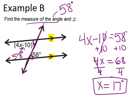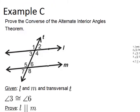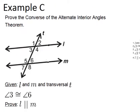Alright, let's go on to the last example. In this one, it says prove the converse of the alternate interior angles theorem. So that means we're given L and M, those lines, and a transversal T. And we're given two angles are congruent, so angle 3 is congruent to angle 6.